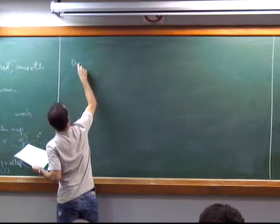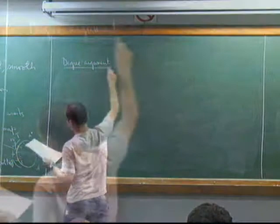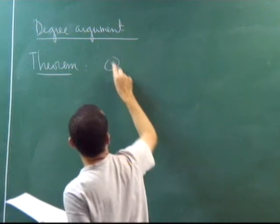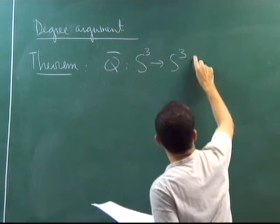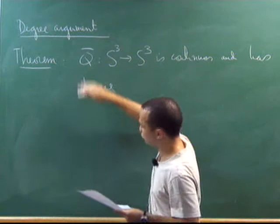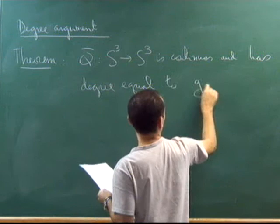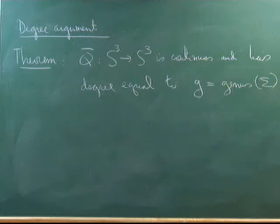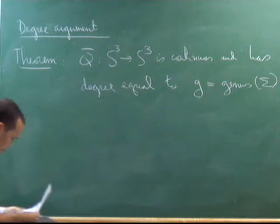This function goes from S^3 to S^3. The degree argument that we need is the following theorem: the map Q-bar, which goes from S^3 to S^3, is continuous and has topological degree equal to the genus G of the surface. This is the only place where we record the information about the genus — the fact that this map has degree G.